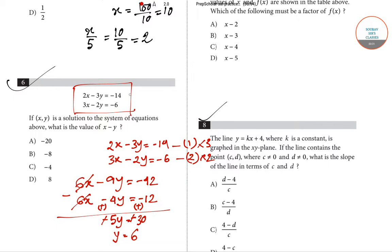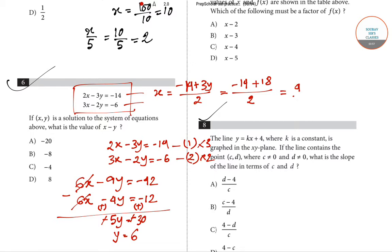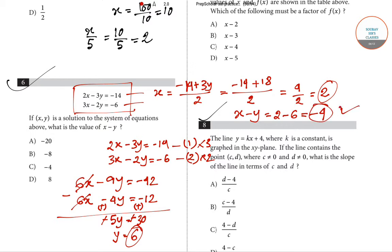Substituting y equals six into equation one, x equals minus fourteen plus three y, divided by two. That gives minus fourteen plus eighteen, divided by two, which is four divided by two, equals two. So x equals two and y equals six. Therefore x minus y equals two minus six, which is minus four. Option C, minus four, is correct for question number six.